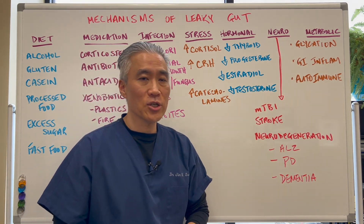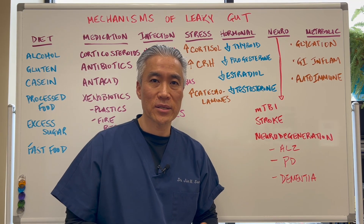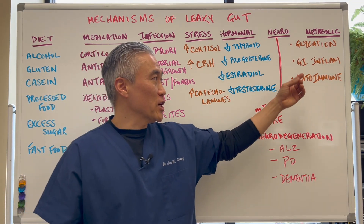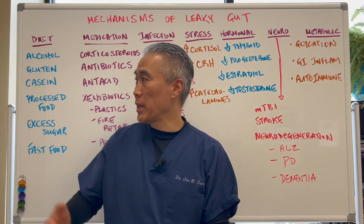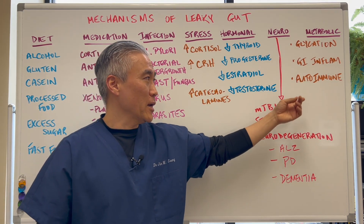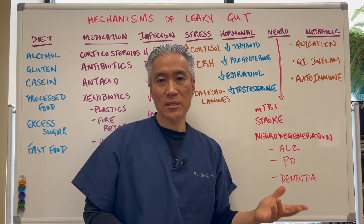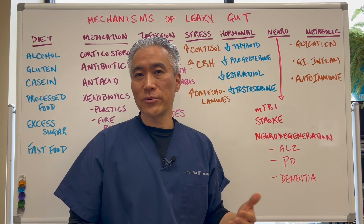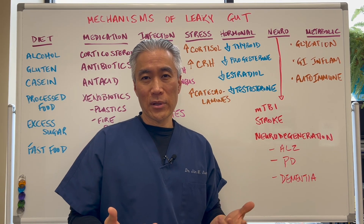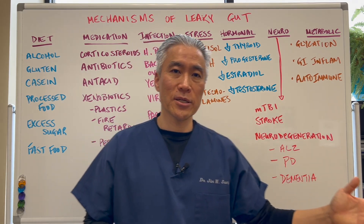Metabolic conditions like glycation or glycated end products can also create problems. GI inflammation, related to maybe food, can also cause problems. And autoimmune disease — like Crohn's, celiac, or ulcerative colitis — can also create leaky gut syndrome.